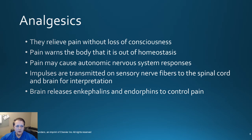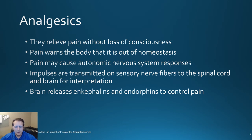We'll talk about analgesics first. Typically, analgesics are going to be able to relieve pain without any kind of loss of consciousness. Normally pain is a protective response where the body is telling you something's not right here. You'll find that a lot of autonomic nervous system responses can occur as a response to pain. The way this actually occurs is impulses get transmitted from sensory nerve fibers detecting the pain and sent up to the spinal cord and up to the brain for interpretation. The brain can also release things like enkephalins and endorphins to help control pain — the body's natural opioids that help with an analgesic sort of effect.